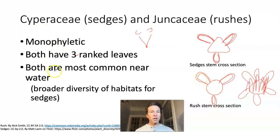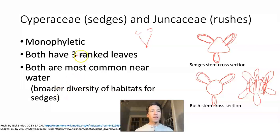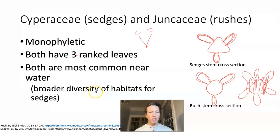Both Cyperaceae and Juncaceae occur near water, as previewed in the earlier photographs. This is especially true for the rushes and less true for the sedges. Many sedges grow near water, but others grow in dry or forested areas.